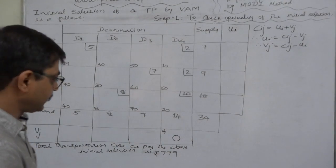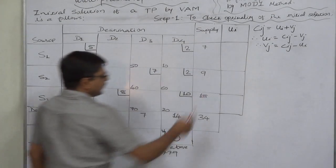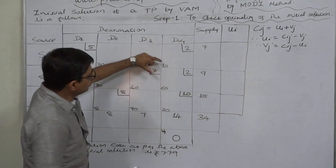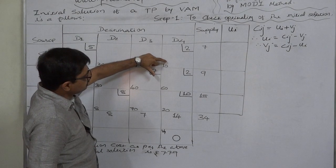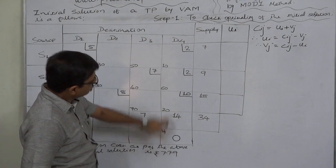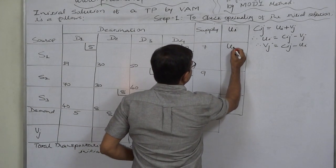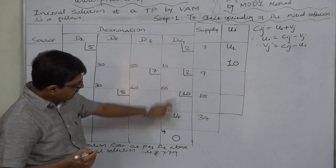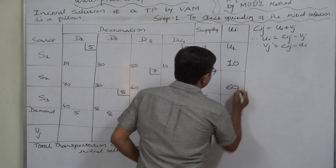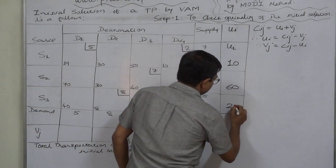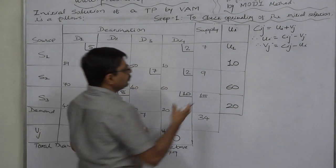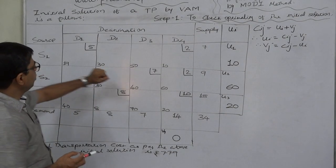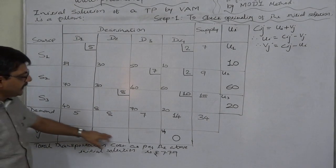This value is taken arbitrarily. Now through the formula ui = Cij minus vj, we can find all values of u and v. For cell (1,4), Cij is 10, so u1 = 10 minus 0 = 10. Similarly, 60 minus 0 gives u2 = 60, and 20 minus 0 gives u3 = 20. Now we have all three values u1, u2, u3. On the basis of these and the relevant Cij values of occupied cells, we can find the remaining values of v.